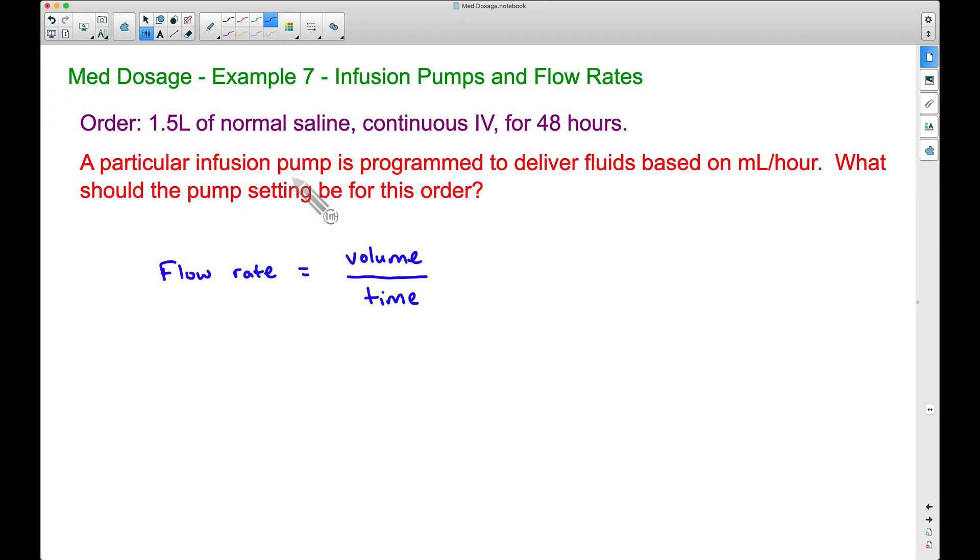Alright, in this video, this is example seven of the med dosage series, and this is infusion pumps and flow rates. We have an order for 1.5 liters of normal saline, continuous IV, for 48 hours. A particular infusion pump is programmed to deliver fluids based on milliliters per hour. What should the pump setting be for this order?